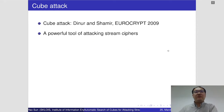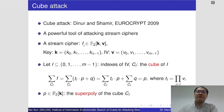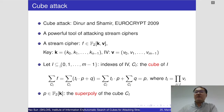Our attacks are based on the cube attack, which has become one of the most powerful tools for attacking stream ciphers. For a stream cipher, the output bit can always be represented as the Boolean polynomial f. Let I be the set of indexes of public variables and CI be the cube of I. By summing up the values of f over the cube CI, we can obtain a new polynomial p.